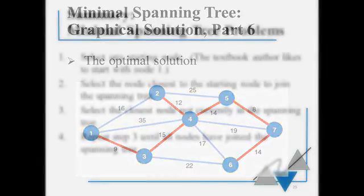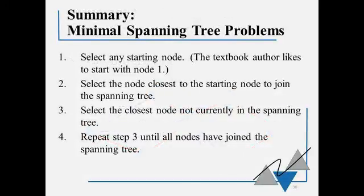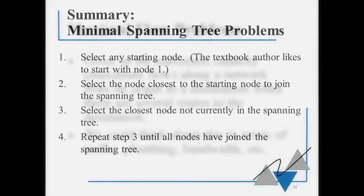So in summary, again, we can select any starting node, then we select the node closest to the starting node to join the spanning tree, and then we select the closest node not currently in the spanning tree. Select the one closest to any of the nodes already in the spanning tree. I'm going to repeat step 3 until all the nodes have joined the spanning tree.